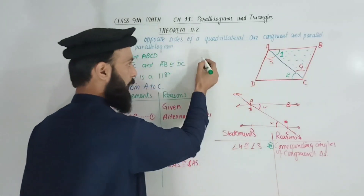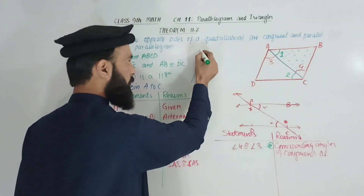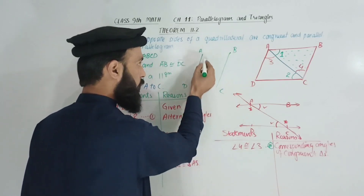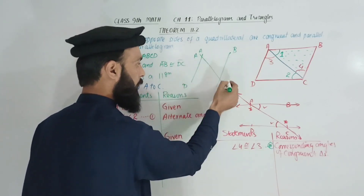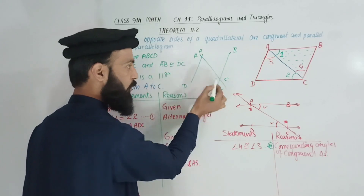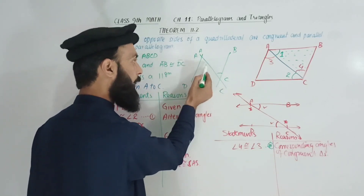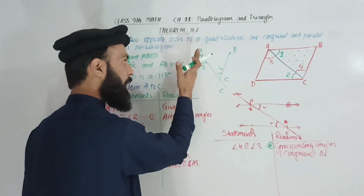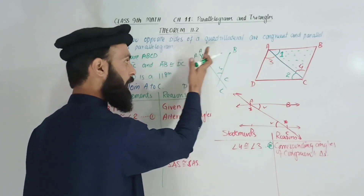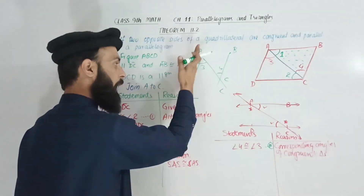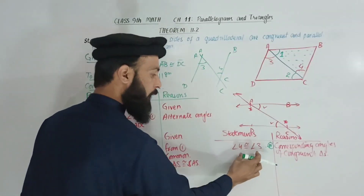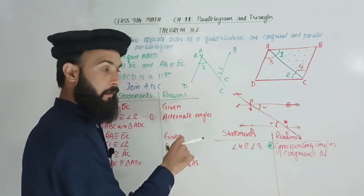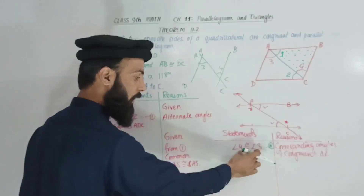Therefore AD is parallel to BC. AD and BC are parallel because the alternate angles formed by transversal AC are congruent. The pair AC is the transversal. Since alternate angles are congruent, AD is parallel to BC.